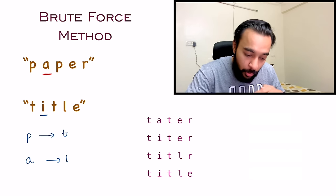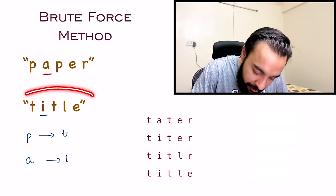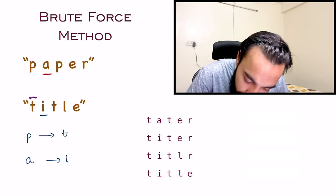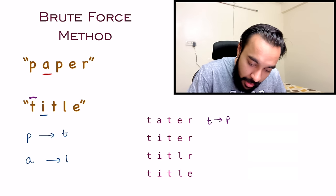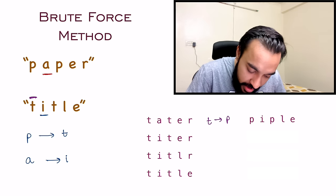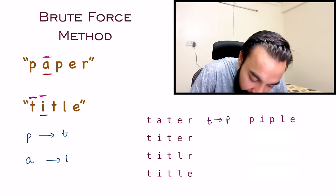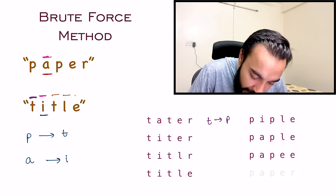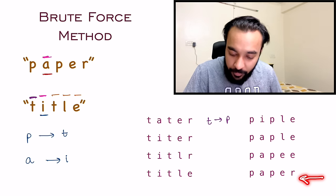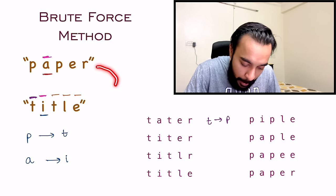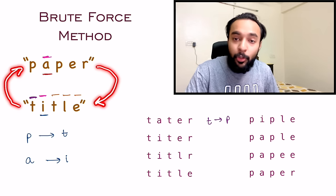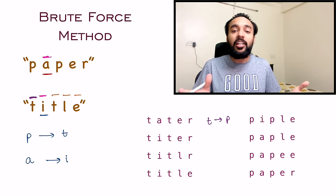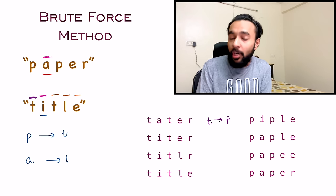But from the last test case, you also have to verify if you can go from the second string back to the first. You follow the same approach but this time replace characters from your second string. Starting with T, replace it with P to get P I P L E. Replace I with A to get P A P L E. Keep moving ahead and you arrive at your final string PAPER. You were able to go from PAPER to TITLE and from TITLE to PAPER — both directions. So these two strings are isomorphic and this solution works.